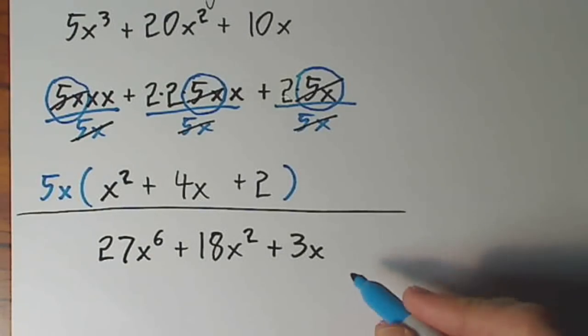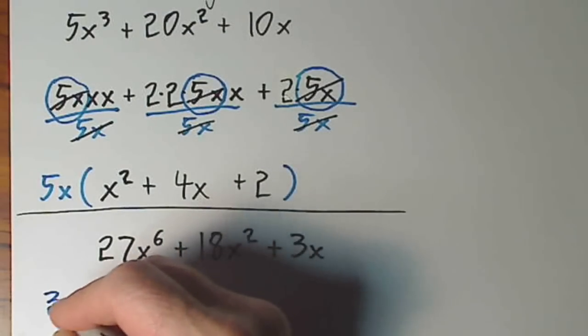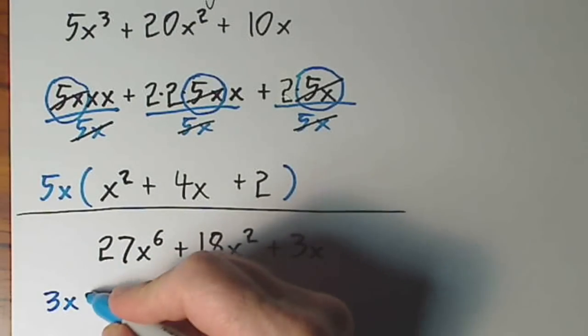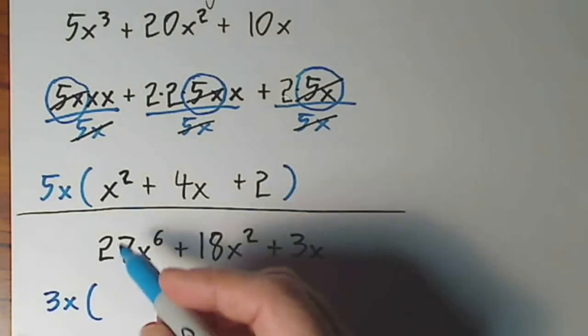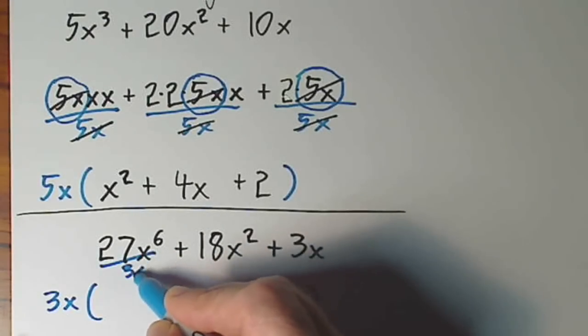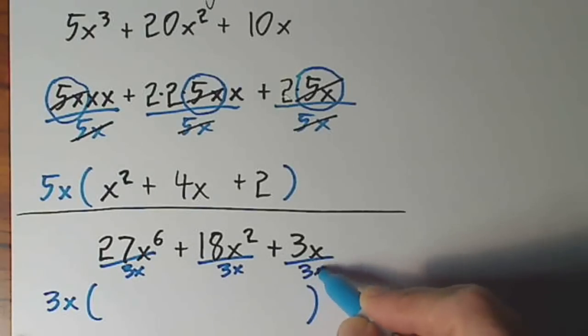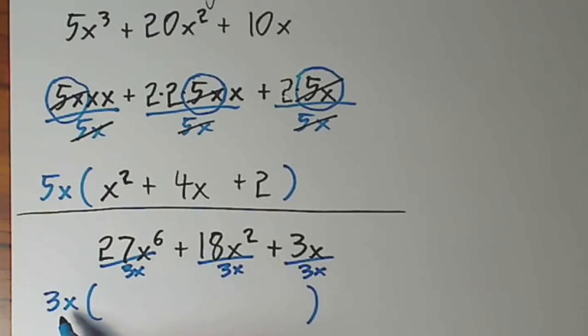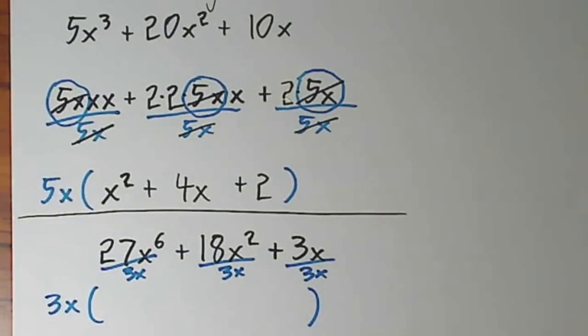So our GCF, the most I can divide out of each term is 3x. So I put that out in front of parentheses. Remember, if I'm going to divide each term by 3x, which I'm about to do, I have to indicate that I'm willing to multiply each term by 3x. That's how you preserve the value of the original polynomial.